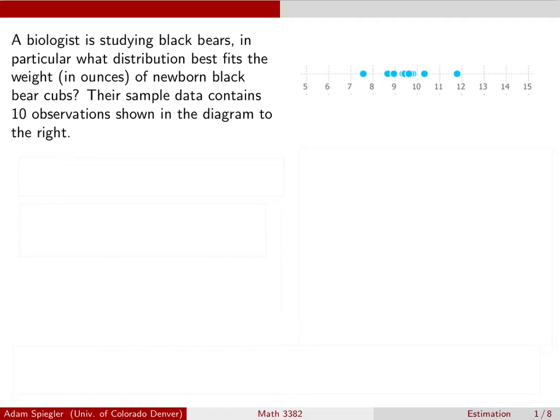And looking at this data, how can we come up with a model for the distribution of the weights of all newborn black bears? And so the first part of this process would be to come up with what's a model that we could use to describe the data that we've observed here. And so if we look at this data, we've seen some distributions already that most of the weights are kind of clustered in the middle, a little bit less than 10 ounces.